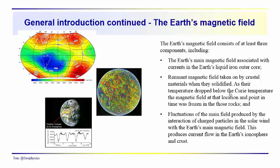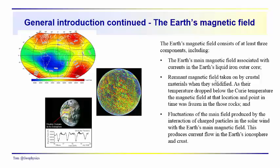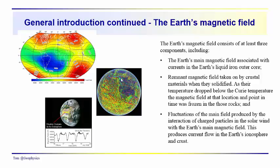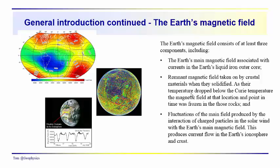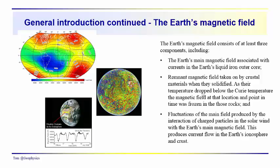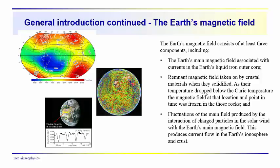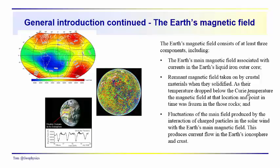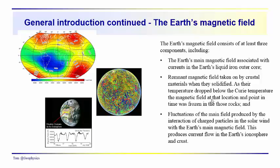Now the remnant field — that is a field which is associated with geology, and is probably going to be the field of interest to you — is shown over here in this animation. It's a field which is more or less frozen into the rocks as they form, or as they were metamorphosed and their temperature dropped below the Curie temperature. So they take on the local magnetic field at that particular location and time.